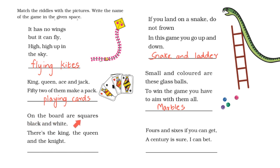On the board are squares black and white. There is the king, the queen and the knight. Which board game has black and white squares? Chess has black and white squares. There is also the king, the queen and the knight. So I write chess.